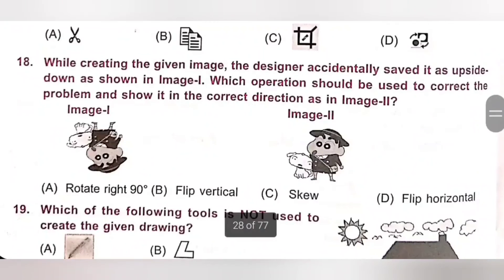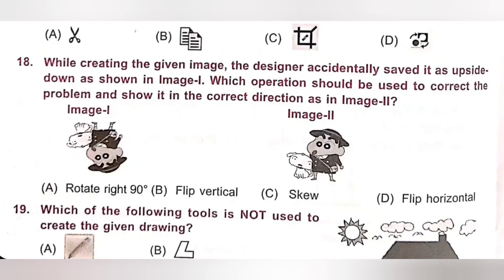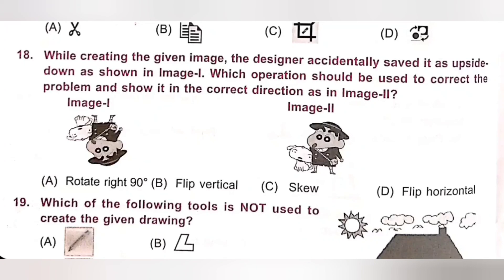Question 18: The designer accidentally saved the image upside down as shown in image 1. Which operation could correct it to show image 2? A. Rotate right 90 degrees, B. Flip Vertical, C. Skew, D. Flip Horizontal. The steps are Home tab, Image group, Rotate, then Flip Vertical. Option B is the correct answer.